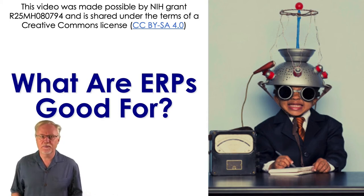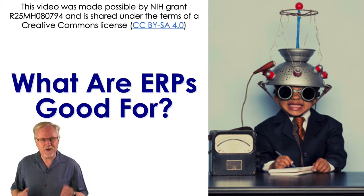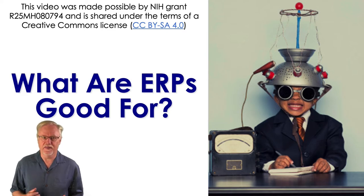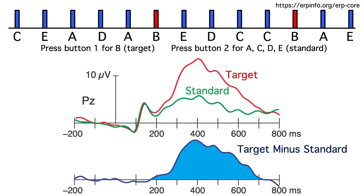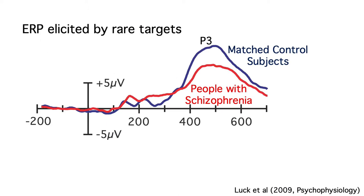You now know a lot about what ERPs are and how they are generated by the brain. But what are they actually good for? How can ERPs be used to answer important scientific questions that can't easily be addressed with other methods? For example, we can see that the P3 wave is larger for rare targets than for frequent standards. But does this tell us anything interesting about how the brain works? Many studies have shown that the P3 wave for oddballs is smaller in people with schizophrenia than in healthy control subjects. But what does this tell us about the nature of brain function in people with schizophrenia?